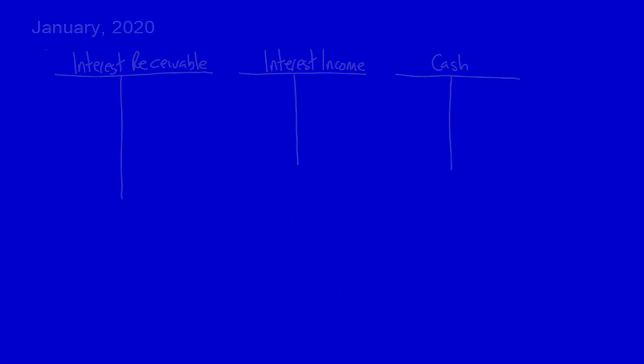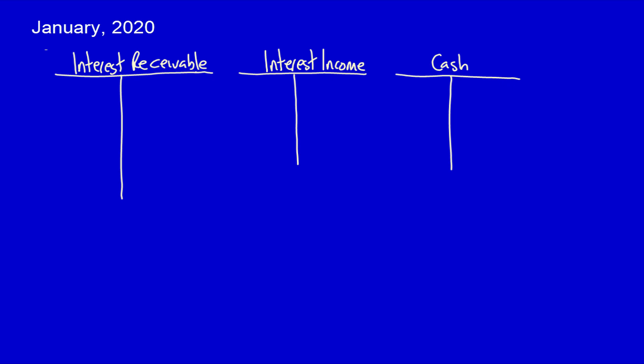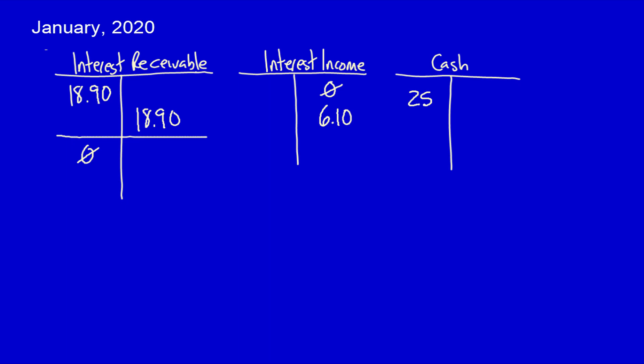Let's look at the balances on January 8th. On January 1st, the beginning of the year, we would have an interest receivable of $18.90 and interest income of zero — because the interest income of $18.90 on December 31st would have been closed to retained earnings, and the opening balance on January 1st would be zero. Now we do the subsequent cash transaction: interest receivable disappears because we've already received $25. Interest income recognizes the $6.10 earned in the current period from January 1st to January 8th, and cash recognizes that we received $25 from the customer.